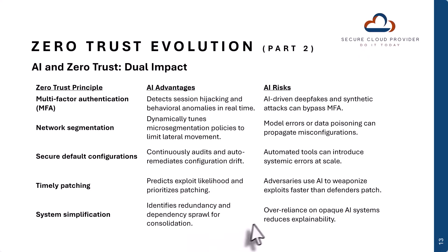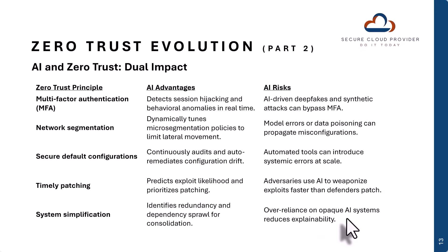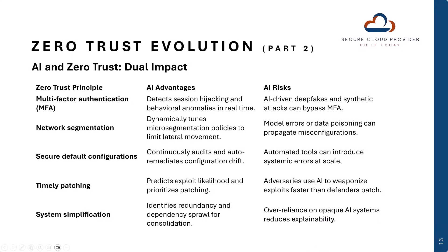However, there is one really important factor to keep in mind: AI systems do not provide visibility into how they identify the redundancy or dependency sprawl for consolidation. AI systems simply ingest massive amounts of data and develop their patterns as their learning models evolve, but you don't have visibility into how it came to its conclusions. Over-reliance on an opaque AI system not only reduces explainability, but may also introduce risk — because if you can't explain it, you also can't check it. These are risks to keep in mind as we evaluate zero-trust evolution and AI's dual impact.